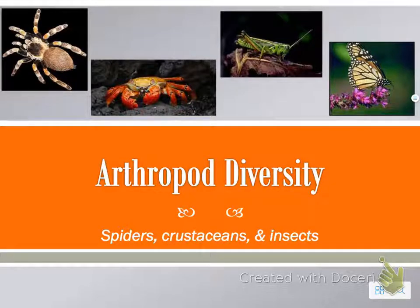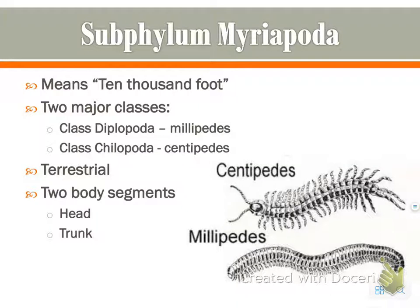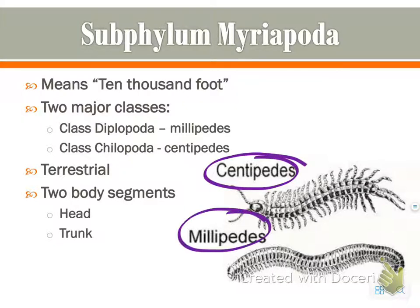Here is part two of your arthropod diversity, and this video will focus solely on the insects. First up, subphylum Myriapoda. These are what you commonly know as centipedes and millipedes. It means 10,000 foot. There are two major classes: Diplopoda is millipedes, and Chilopoda is centipedes.